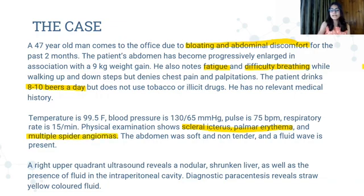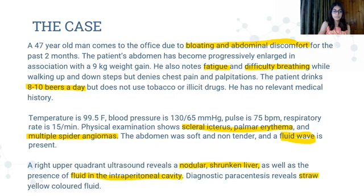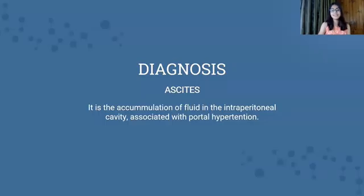We also find a fluid wave. On ultrasound, we find a nodular shrunken liver, which indicates liver cirrhosis, as well as the presence of fluid in the intraperitoneal cavity, which was straw yellow in color. With this entire case in mind, the picture painted is that of our diagnosis: ascites.